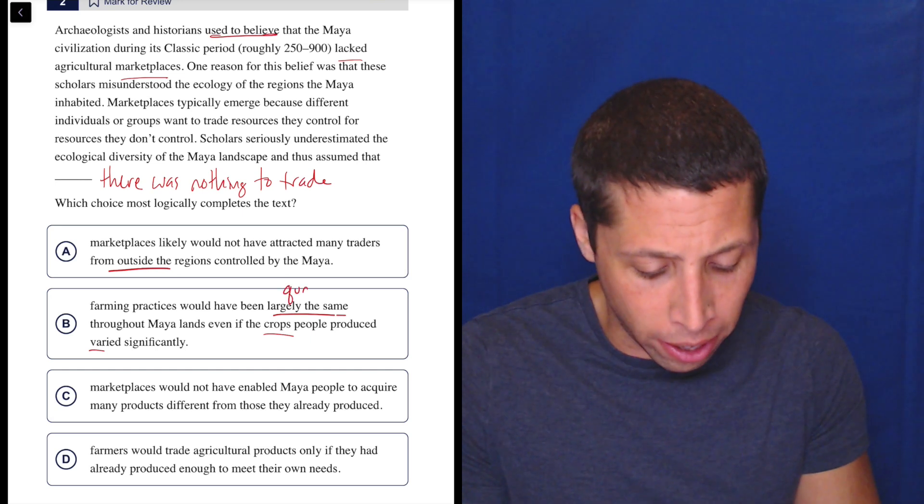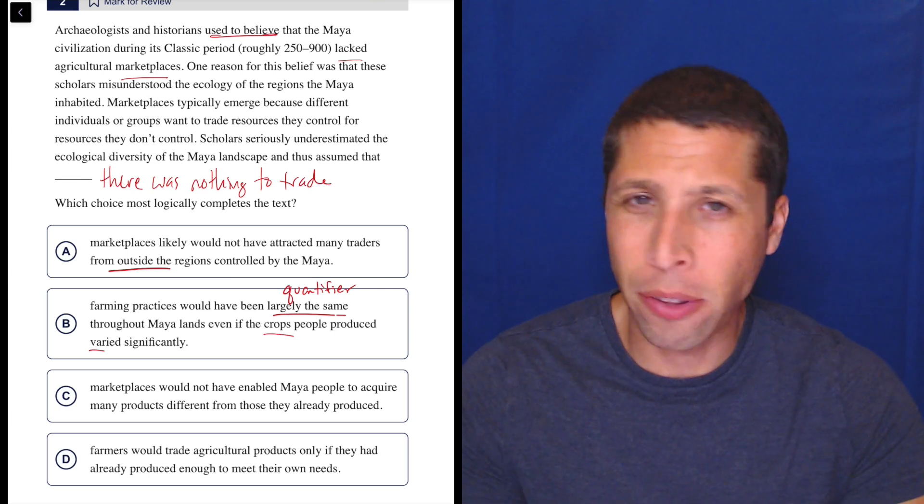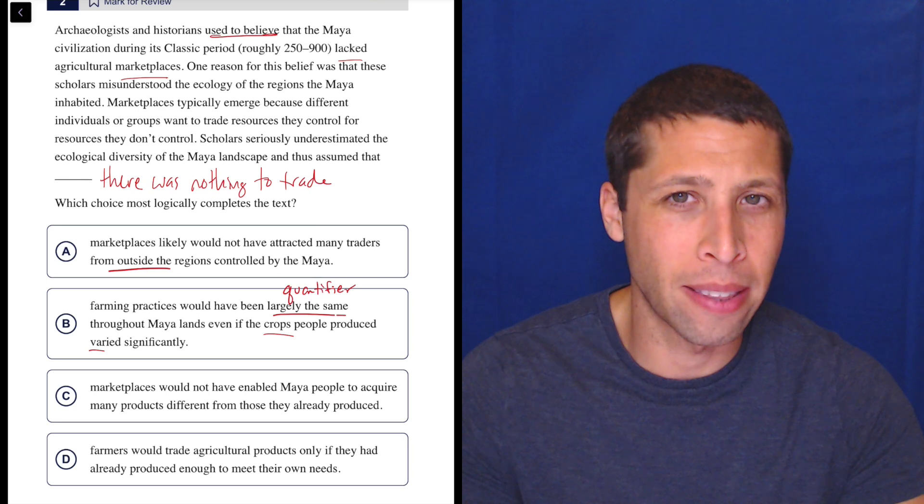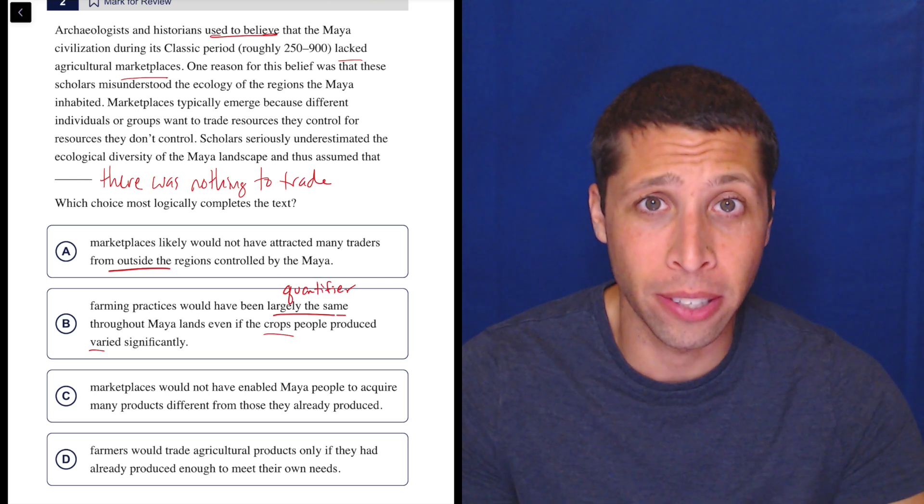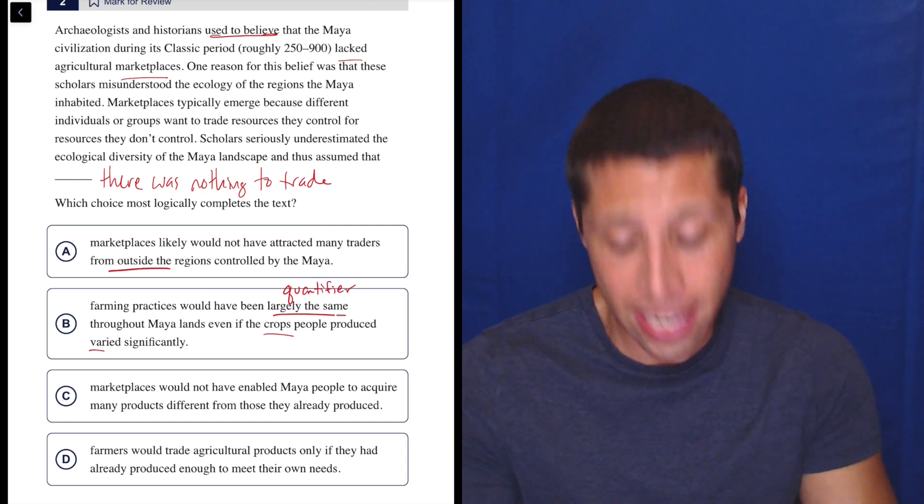But also just in a very simple way, largely the same - this is a quantifier or maybe a comparison. But if they're the same, then we're starting to quantify something. And I don't think they're talking about their agricultural practices. Certainly not enough to say that everyone's doing the same kind of farming. I just don't think it gets into that.